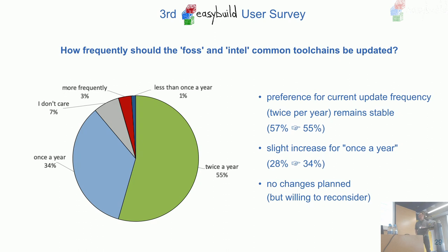How frequently should we update the FOSS and Intel common toolchains? We now do it twice a year — trying for January and July, though sometimes we delay. There's no 2020a yet because we're waiting for an OpenMPI release with important bug fixes. Some people say once a year is enough, but for something like AMD Rome it's quite important to have a GCC 9-based toolchain, and waiting a year for that could be too long. Twice a year seems the right pace.